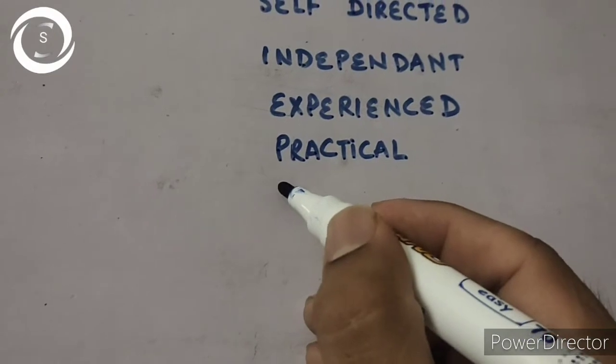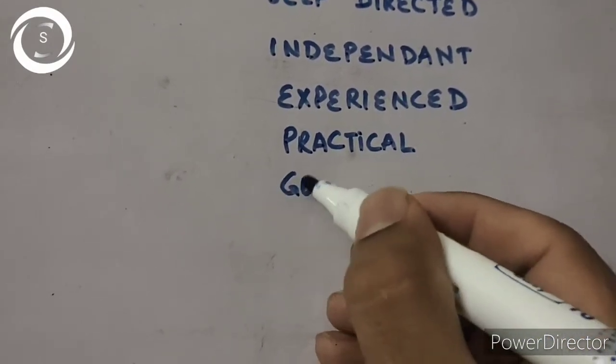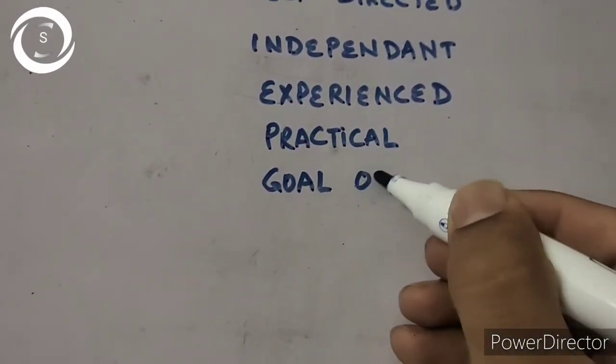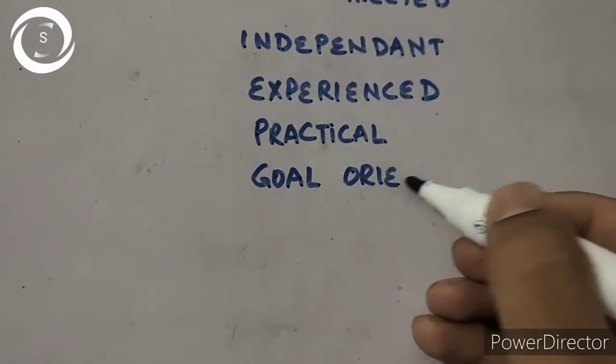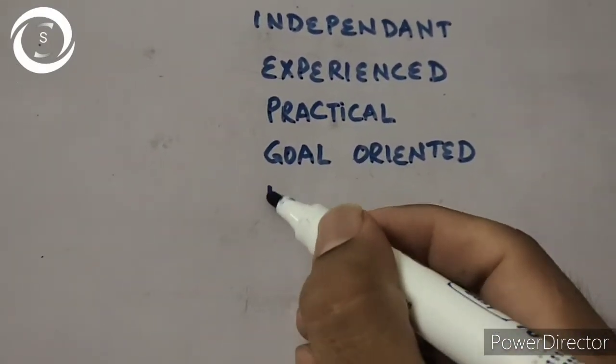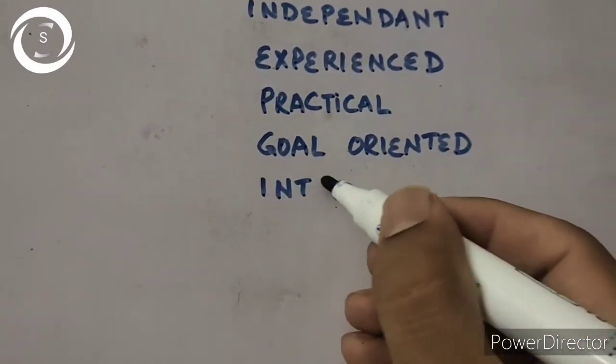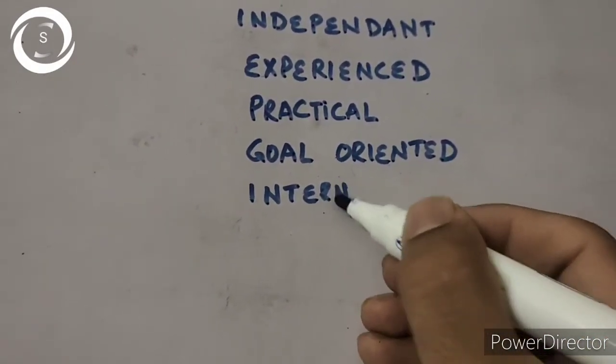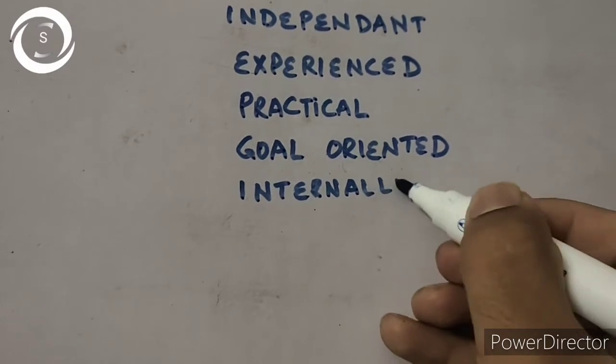In today's world, an adult can only learn if he or she has internal desire, thirst, motivation, or drive. Only then does active learning take place. If there is no internal desire and you feed them with new knowledge and skills externally, they will not learn.